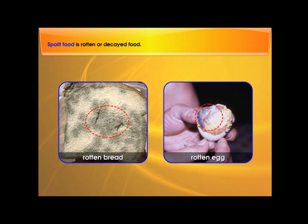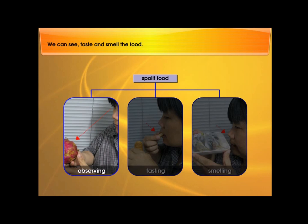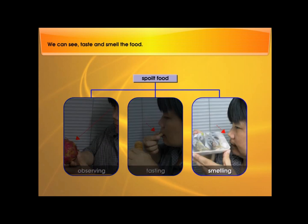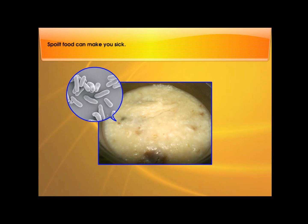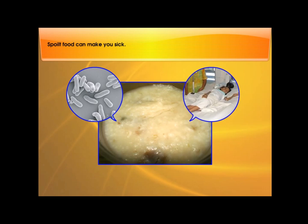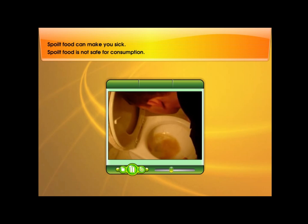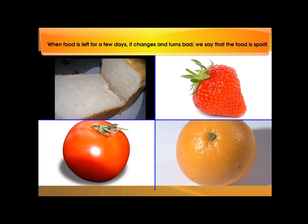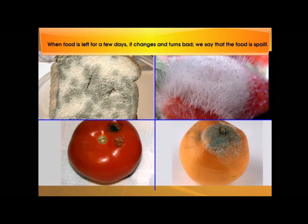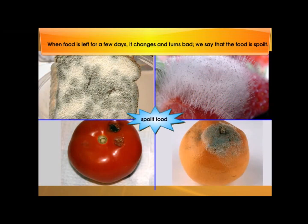Spoiled food is rotten or decayed food. We can see, taste, and smell the food. Spoiled food can make you sick. Spoiled food is not safe for consumption. When food is left for a few days, it changes and turns bad. We say that the food is spoiled.